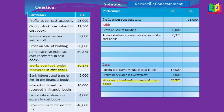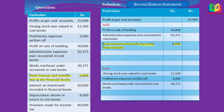The next item — works overhead — is an expense and it is understated in cost book. Expenses understated will increase the profit, so in order to rectify that, we will subtract it. The next item — bank interest and transfer fee — is understated in the financial book, so in order to rectify it, we have to add it.